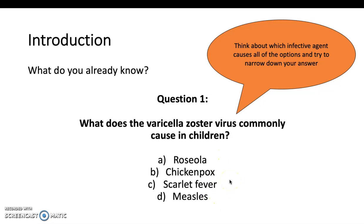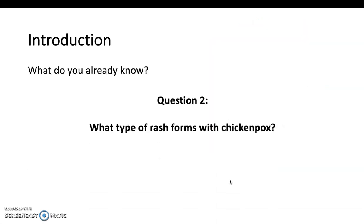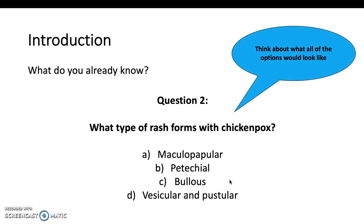Try to narrow it down — varicella zoster causes chicken pox. Question two: what type of rash forms with chicken pox? Macular, papular, petechial, bullous, or vesicular and pustular? Think of what chicken pox looks like and how you would describe it in dermatology terms. It's vesicular and pustular.